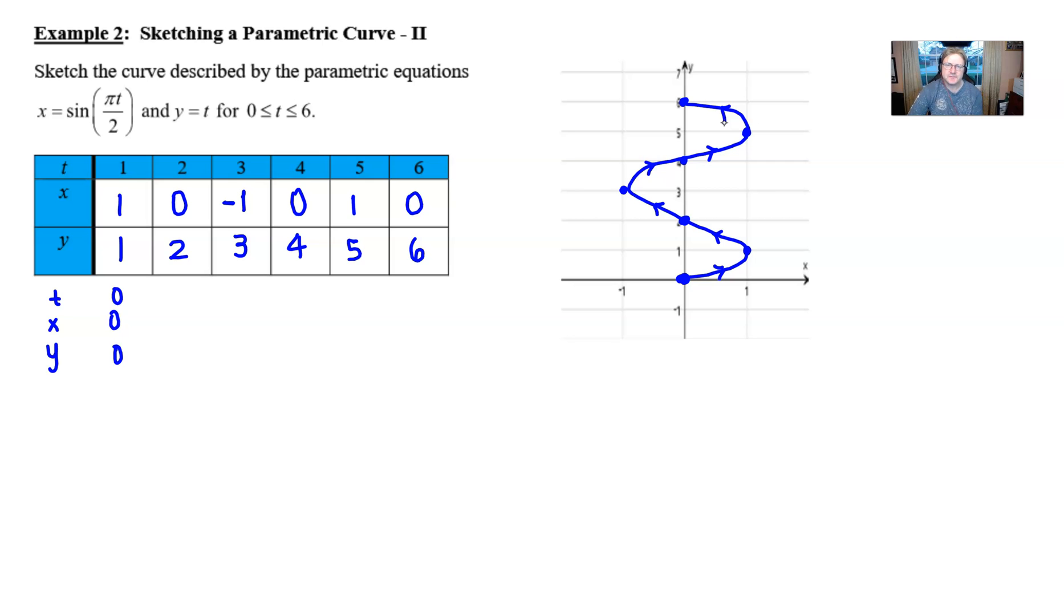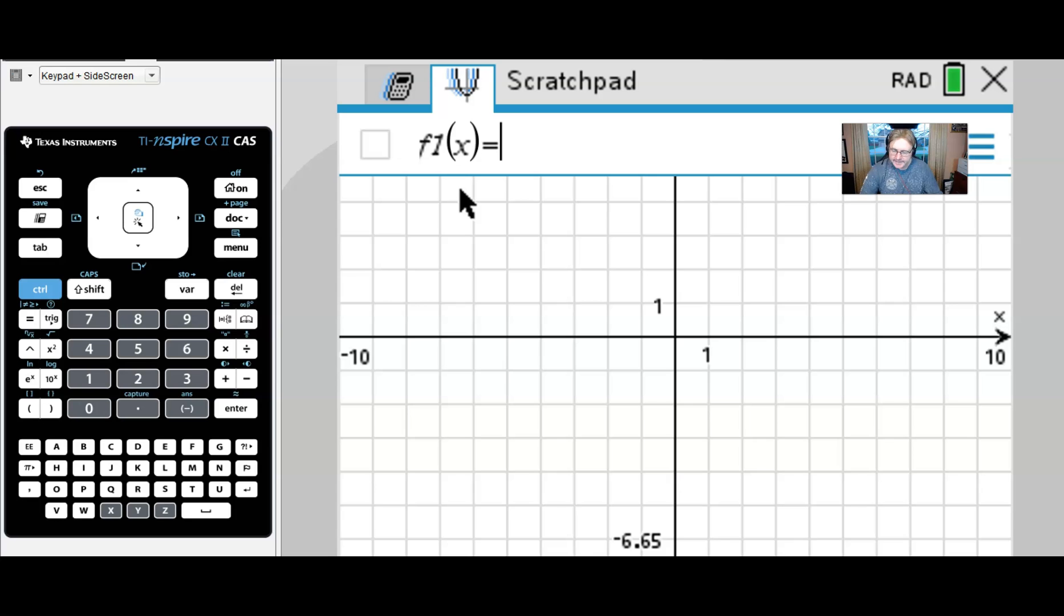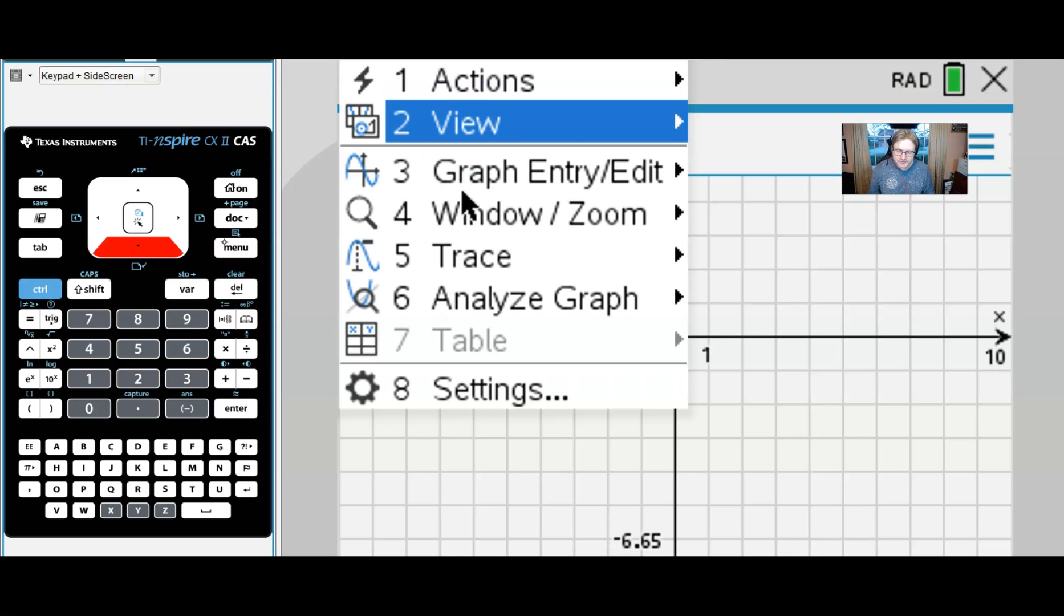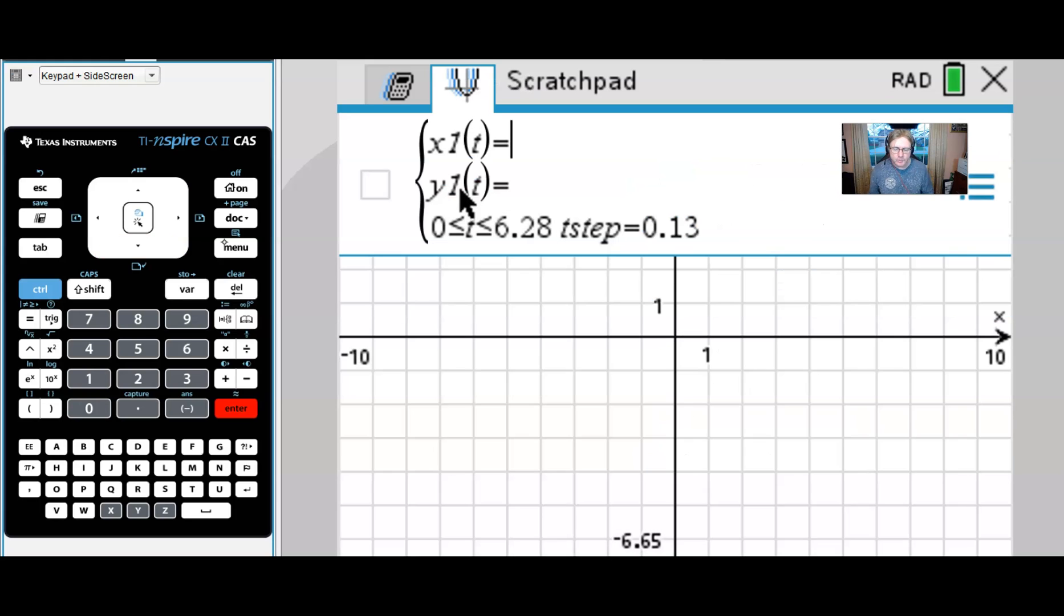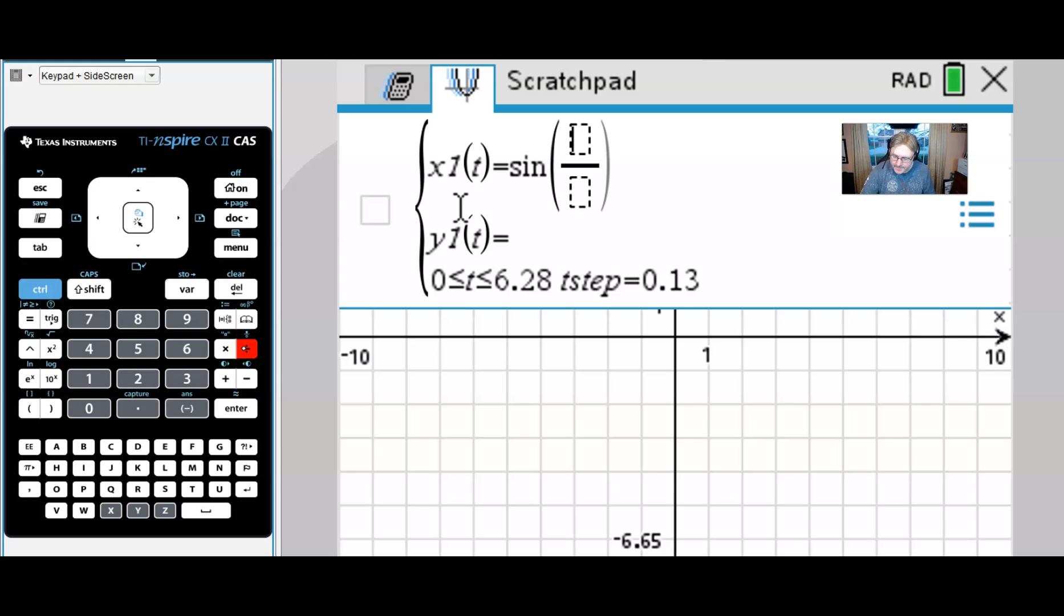Let's take a look and see what technology does for this problem. We're using the TI Inspire CX2 premium software to demonstrate this. You can graph this pretty much on any graphing calculator. We'll go into a parametric mode, and we're going to enter our x function, which was the sine of the fraction pi times our t divided by 2. And then the y function was just simply t. And if I remember correctly, we were graphing from 0 to 6.